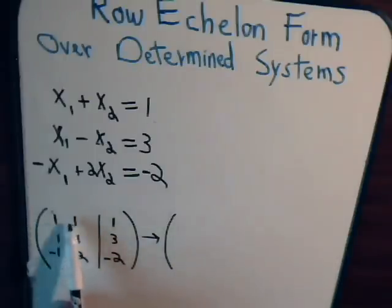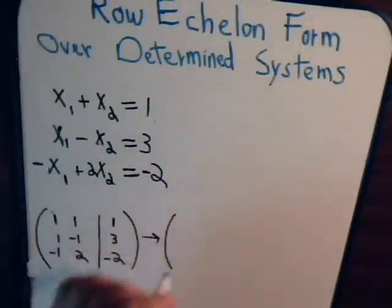So imagine multiplying the first row by negative 1 and adding it to the second row. Now when I say multiplying the first row by negative 1, I don't mean literally these numbers here don't change.